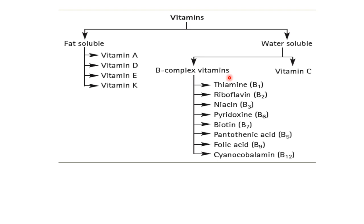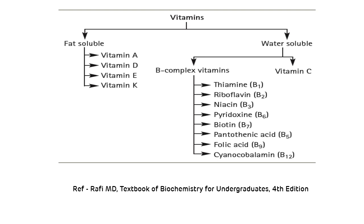In the B complex vitamins, the examples are: thiamine, riboflavin, niacin, pyridoxine, biotin, pantothenic acid, folic acid, and cyanocobalamin. This picture shows the full classification of vitamins.